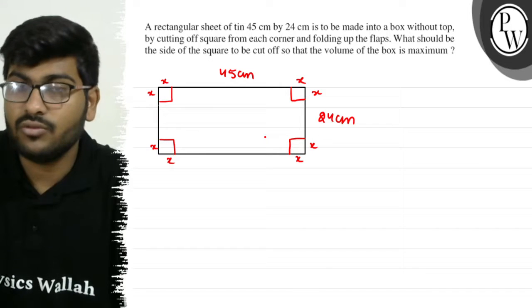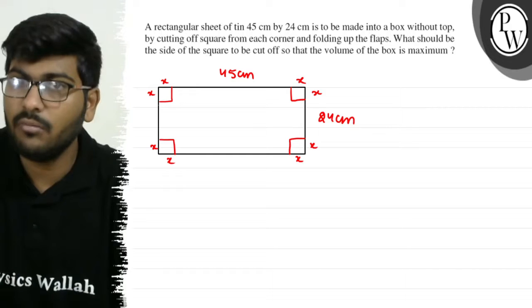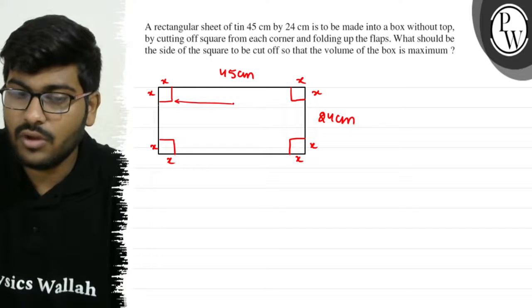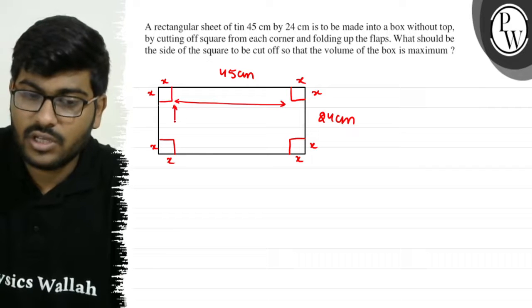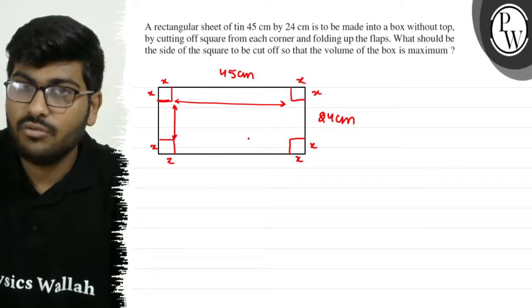So the dimensions that we have for our tin box rectangular sheet - we need to find length, breadth, and height. Length is here, breadth is here, and height is here.